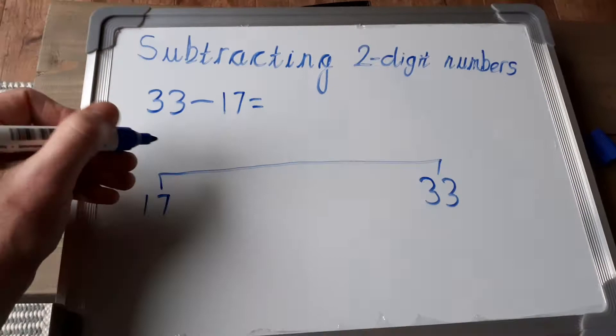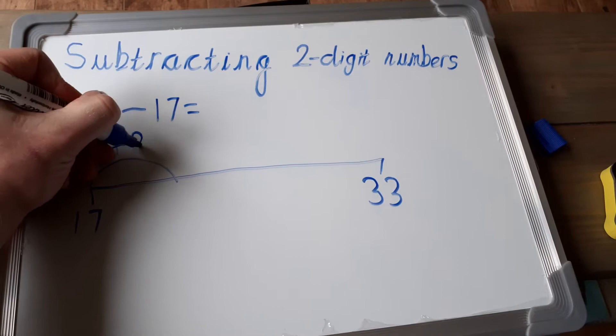So what we would do, we would do a little jump. We would add 3 using our number bonds to 20, because 17 plus 3 makes 20.